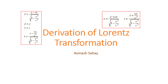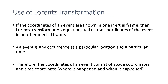How do we derive Lorentz transformation equations of special theory of relativity? If we know the coordinates of an event in one inertial reference frame, we can use Lorentz transformation equations to find the coordinates of the event in another inertial reference frame. An event is anything that happens at a particular location and at a particular time. The coordinates of an event consist of space coordinates — where it happened — and time coordinates — when it happened.